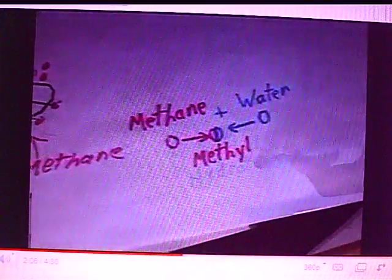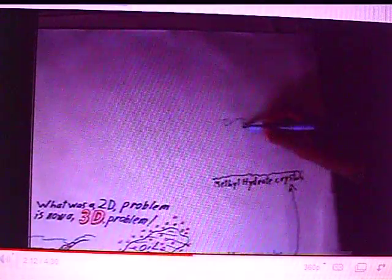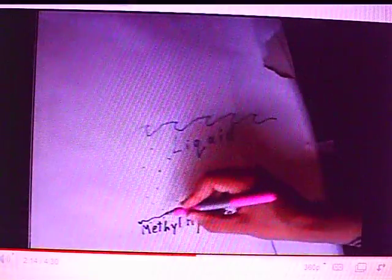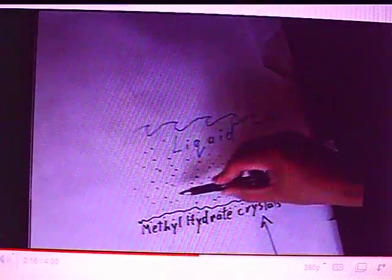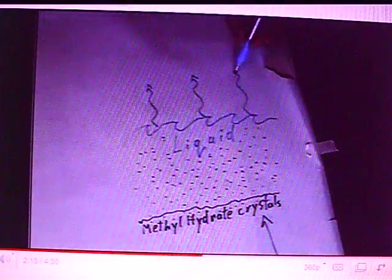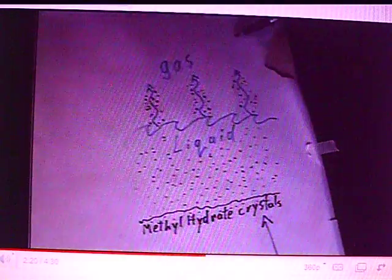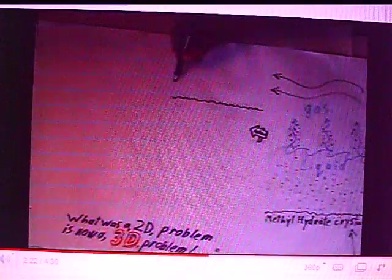At the bottom of the ocean, the methane is combining with the super-cold water and forming methyl hydrate crystals. As these methyl hydrate crystals reach the surface, they expand 99 times and evaporate along with the oil-water Corexit molecules. Then they get carried inland by the wind.